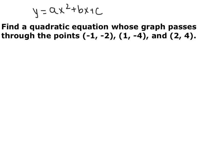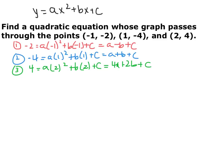Now we have a word problem: find a quadratic equation whose graph passes through the points (-1, -2), (1, -4), and (2, 4). I'll use the standard form y equals ax² plus bx plus c, where a, b, and c are unknown — three unknowns. Whenever you have a point on a graph, it makes the equation true. Plugging in the three points: from (-1, -2): negative 2 equals a minus b plus c; from (1, -4): negative 4 equals a plus b plus c; from (2, 4): 4 equals 4a plus 2b plus c. Now we have three equations with three unknowns. Go ahead and pause and solve for a, b, and c.